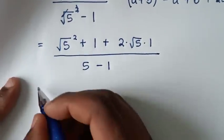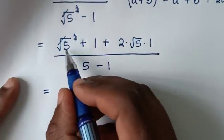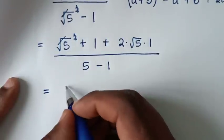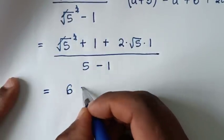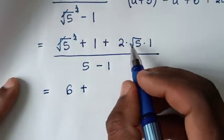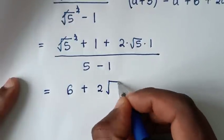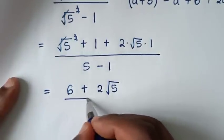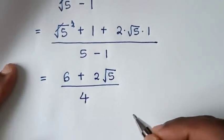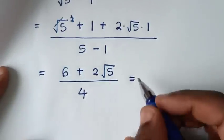In the next step, the numerator becomes 5 plus 1, which is 6, plus 2 times square root of 5, which is 2 square root of 5. The denominator is 5 minus 1, which is 4.